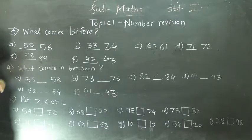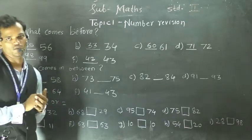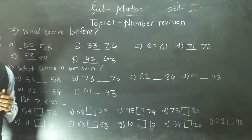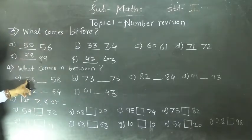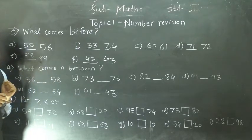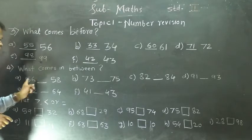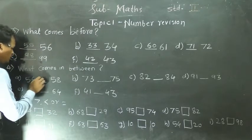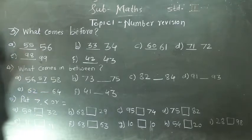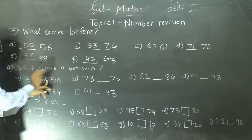Next instruction: what comes in between? So here in this question we have to find the middle number. Two numbers are given and we have to find which is the middle or between number. So see: 56 and 58. In between these two numbers, which number is there? In the number series: 56, 57, 58. So 57 comes in between. So 57 is the between number of 56 and 58.